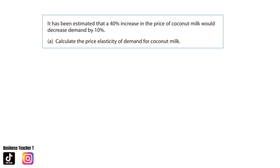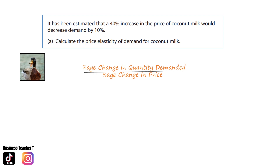First, we put our formula down — don't forget, the quacky duck sits on the pond: percentage change in quantity demanded divided by percentage change in price. The change in quantity demanded is a decrease of 10%, and there's been an estimated increase in the price of coconut milk by 40%. That gives us our answer: negative 0.25, or 0.25 would be accepted.